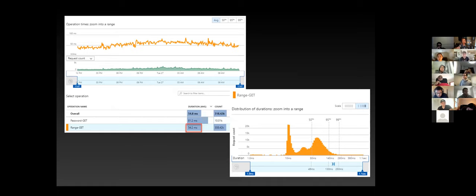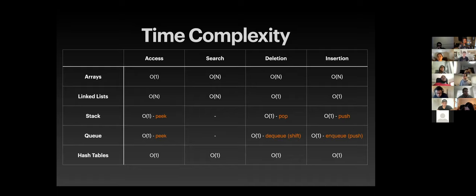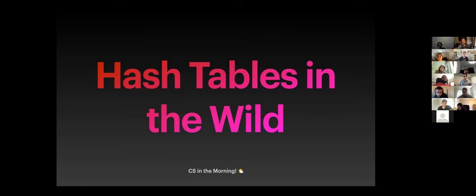To wrap up: hash tables are fantastic if you have the right use case for them. As we've seen, hash tables allow access, search, deletion, and insertion all in O(1) time. This has been hash tables in the wild — a great real-world demonstration of why algorithmic complexity matters.